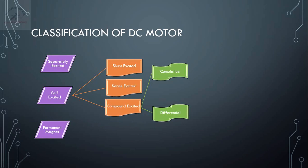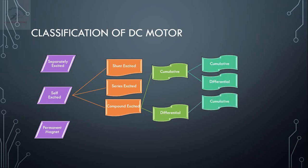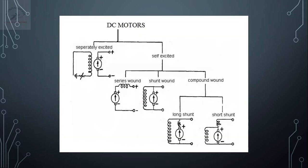In cumulative and differential compound motors we have two more sub-categories: long shunt and short shunt.